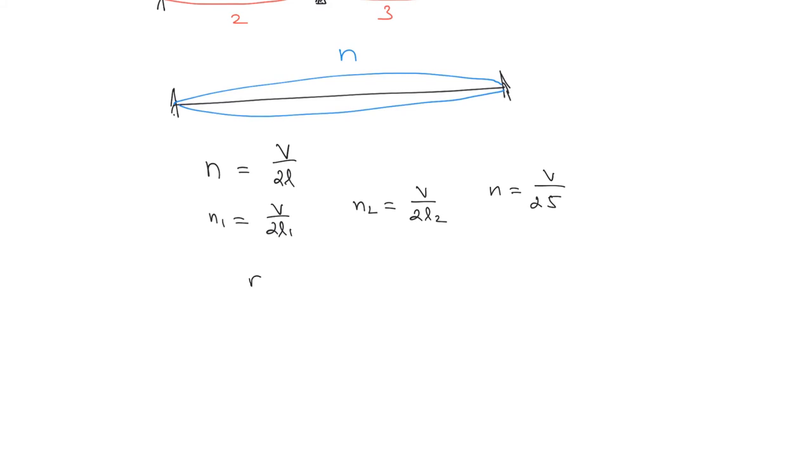Finding the ratio n to n1 to n2, we can write them as v divided by 2 into 5, is to v divided by 2 into 2, is to v divided by 2 into 3.